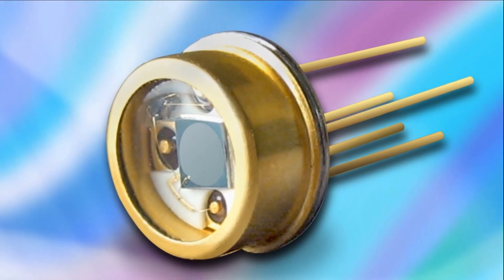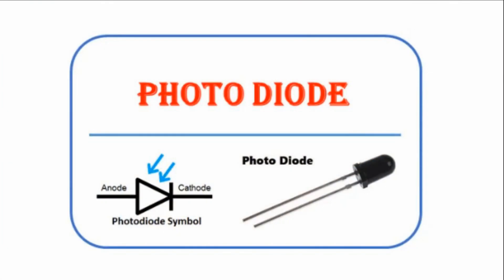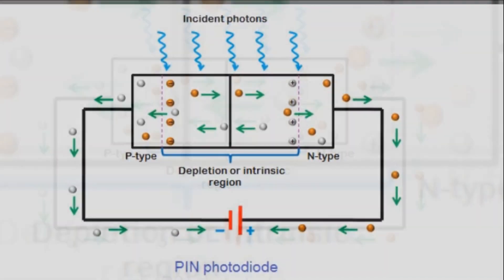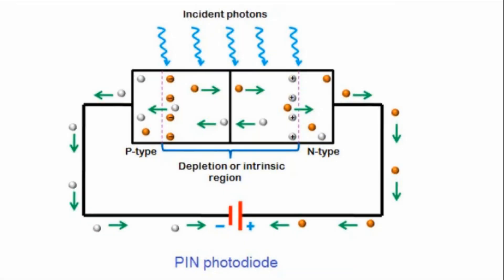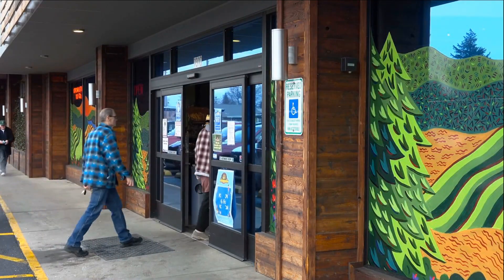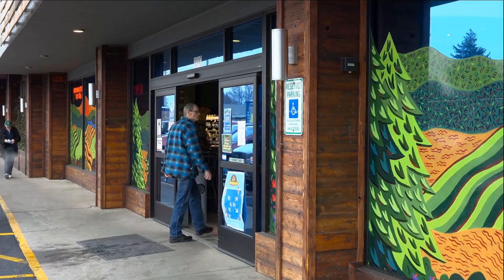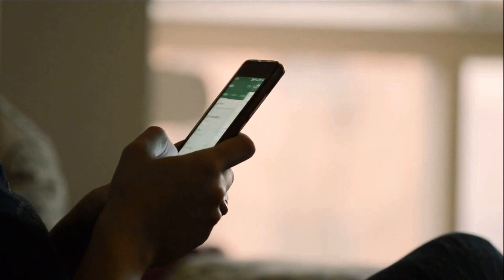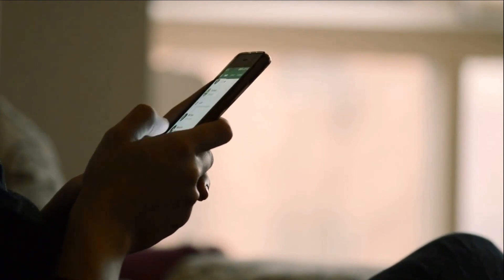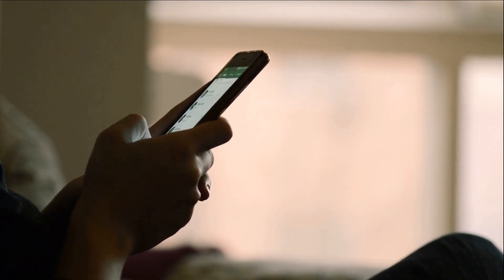Lastly, let's talk about photodiodes. These act as the eyes for many electronic devices — they are designed to detect light. When light hits a photodiode, it generates an electrical current. This property is used in a variety of applications, like automatic doors at the supermarket or the light sensor on your phone that adjusts screen brightness based on the ambient light.